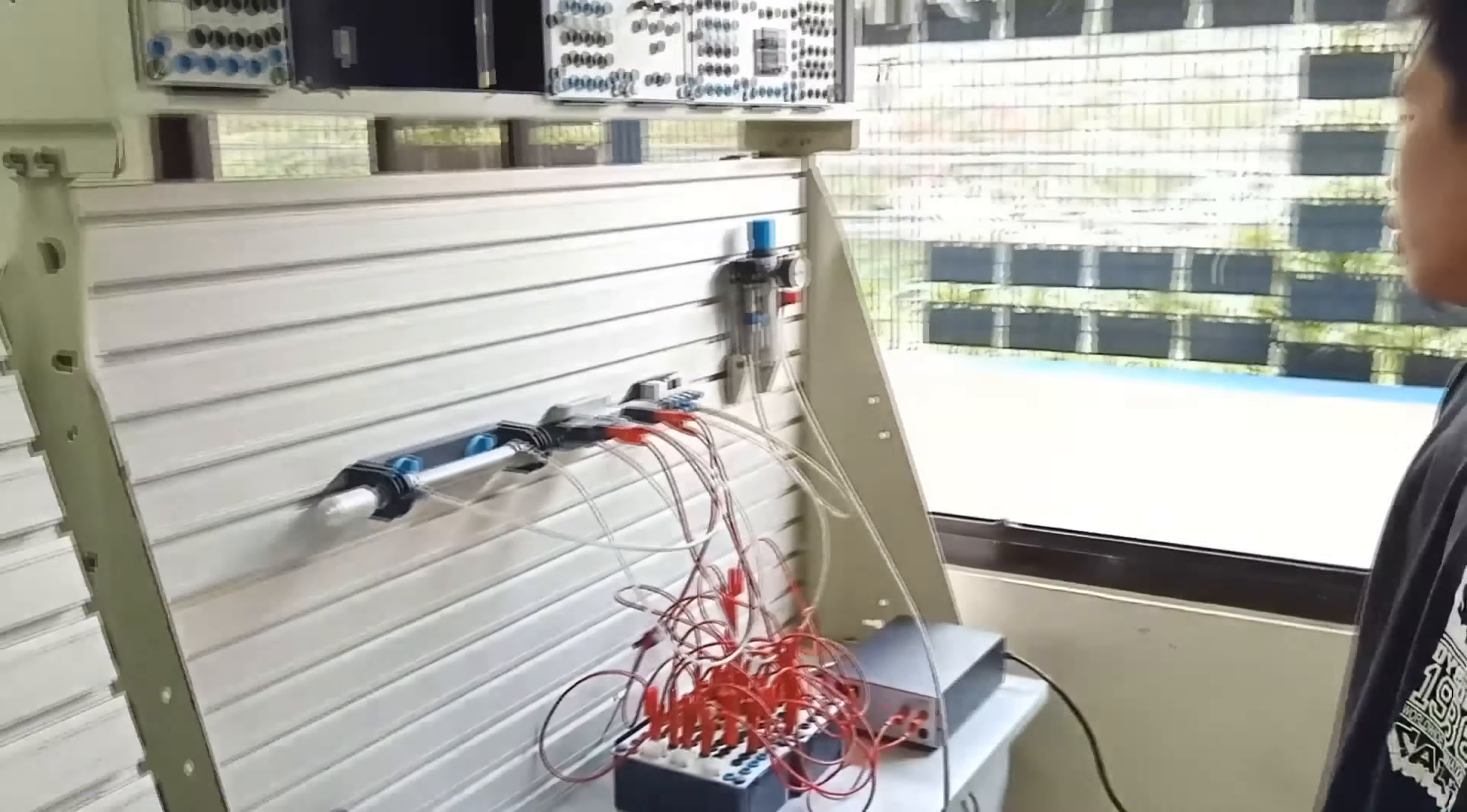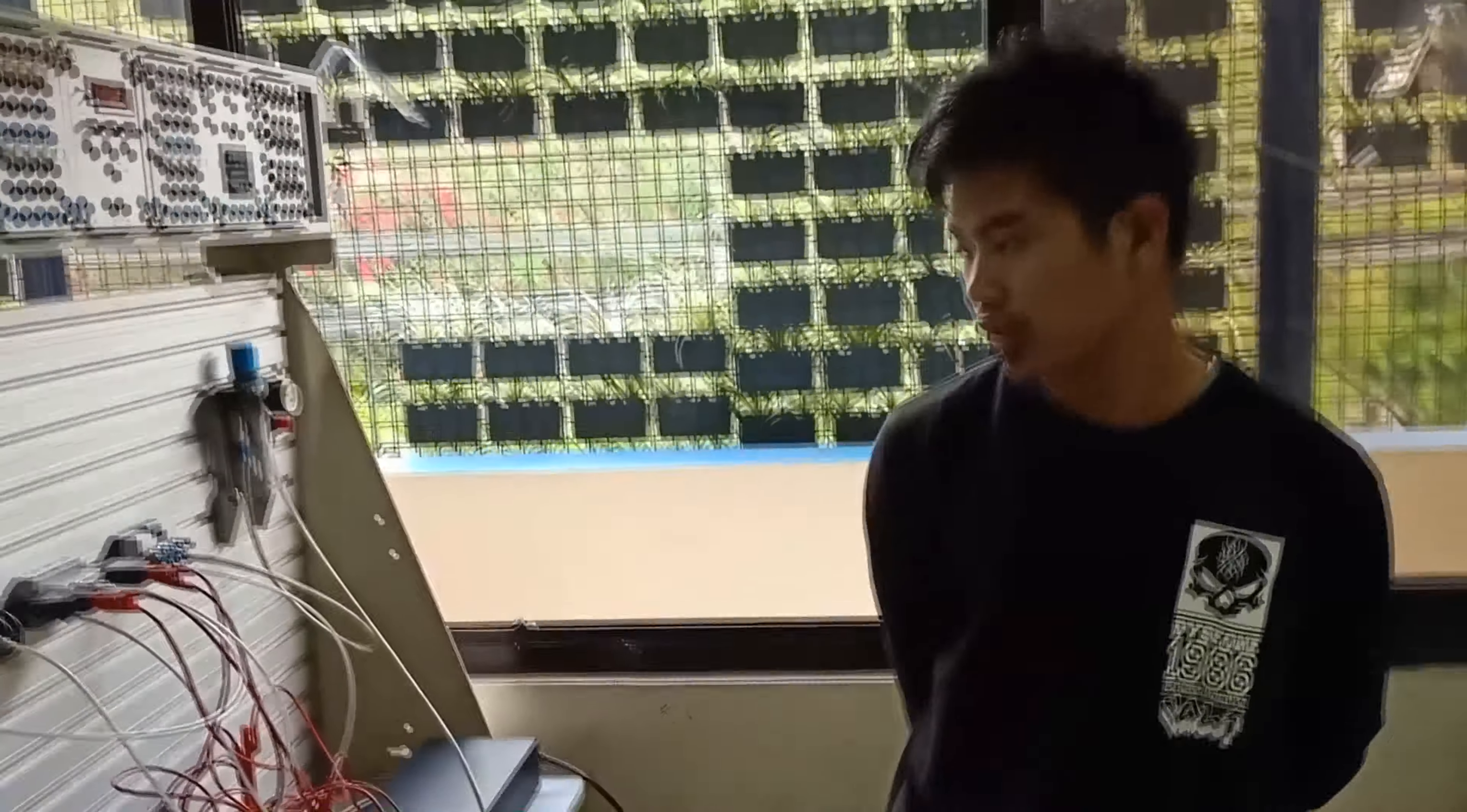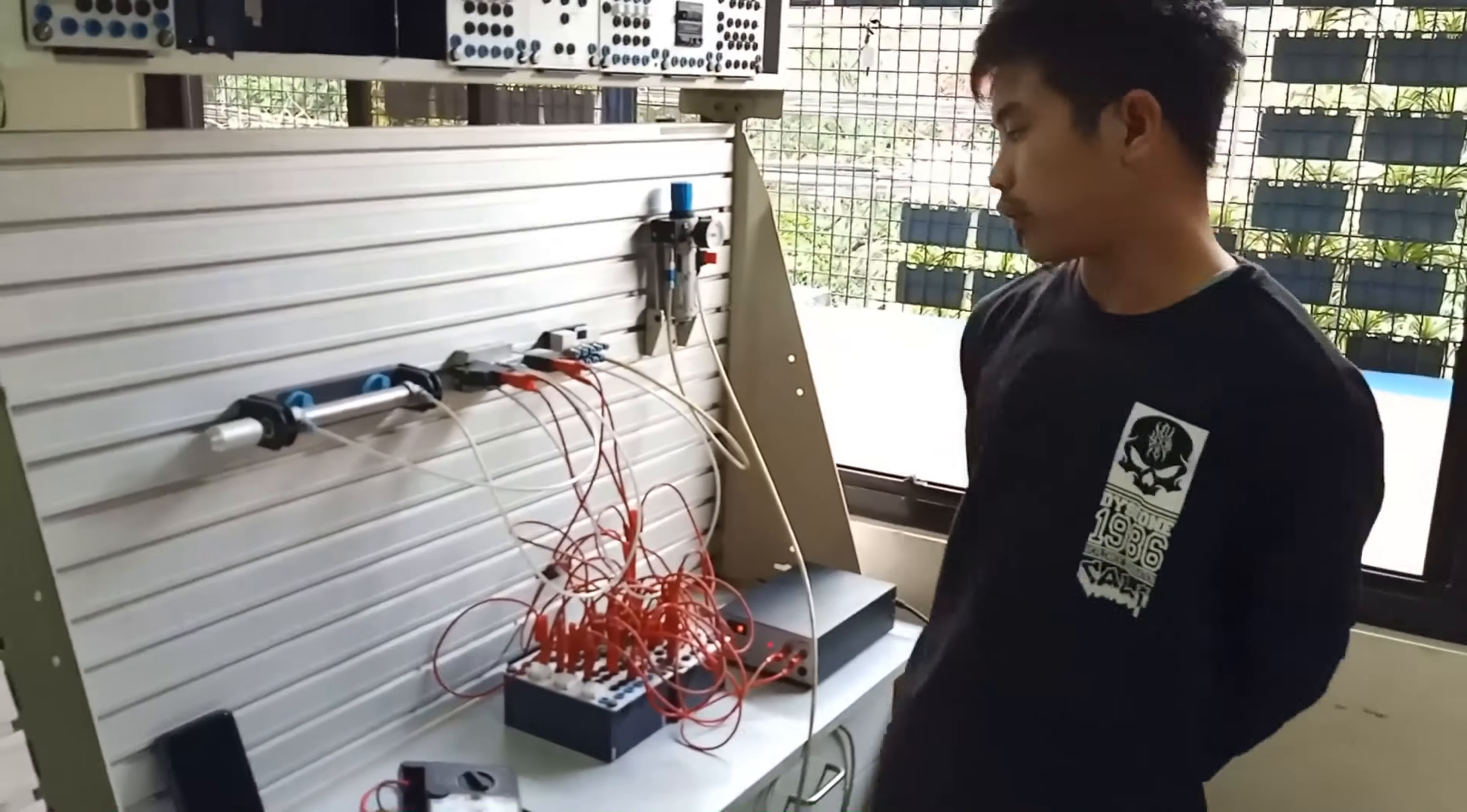We have also what we call air dryer. The purpose of air dryer is collecting the moisture or dust coming from the tank. We have also what we call directional control valve. We have two types of directional control valve. The one is manually control valve and the cylinder control valve. Today we are going to use a cylinder control valve. The purpose of the cylinder control valve is changing the flow of compressed air.